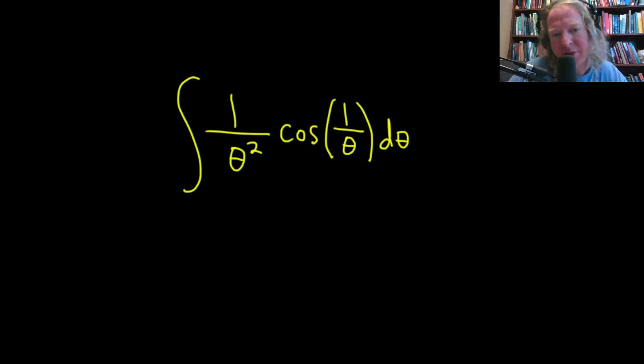In this example, we are going to integrate 1 over theta squared times the cosine of 1 over theta. Let's go ahead and work through this solution.